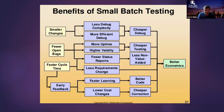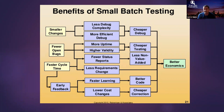Many companies I work with say their cost of changing things is really high. Why? Because they're using waterfall — they have large batch sizes, infrequent feedback, long queues, and all the attendant problems. If you were to pick the worst thing you could do for software development, you would invent something like waterfall: large batch sizes, infrequent feedback. That's why it didn't work very well.